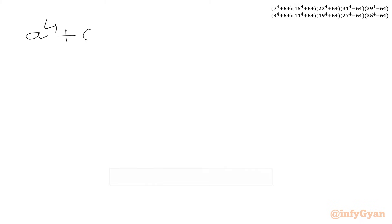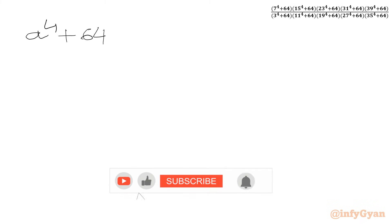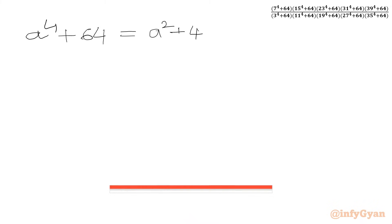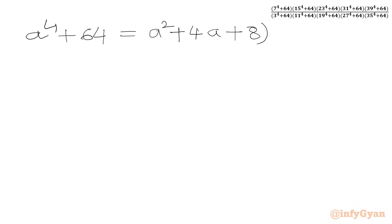Again we will use the completing the square method. We can write a⁴ + 64 as (a² + 4a + 8)(a² − 4a + 8).